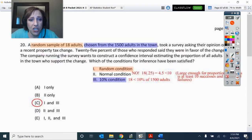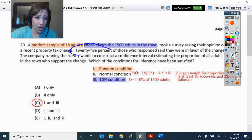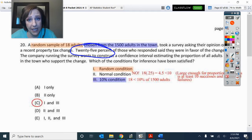Number 20. So the question is which conditions for inference have been satisfied? Well, the random stated that and I've highlighted what goes with what. 18 chosen from 1500. 18 is less than 10% of the 1500 adults, but the normal condition has not been satisfied because this is a proportion problem. And our P, our P hat was 25%. So N times P is not greater than or equal to 10.